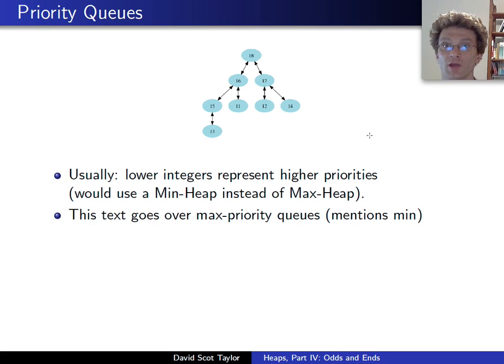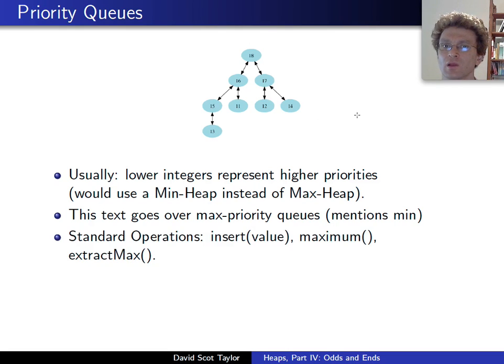Using heaps as priority queues seems very natural. We have our insert. We have our delete max or delete root, whatever the root is. If you're using a min heap, that's fine. And extract max or extract highest priority, whether you're using a low priority. Either way, you're talking about the root. Those are all standard operations.